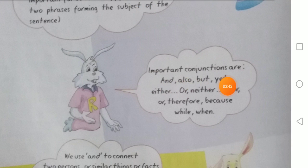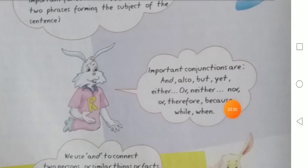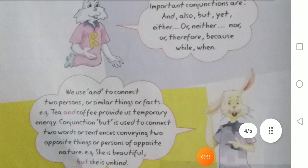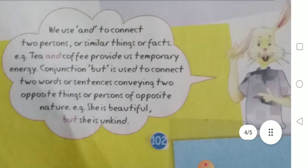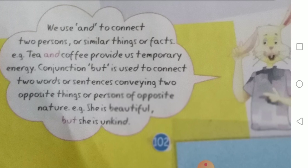Important conjunctions: जो खास conjunctions हैं जो हम बोलने में और लिखने में इस्तेमाल करते हैं — and, also, but, yet, either, or, neither, nor, therefore, because, while, when. ये सब भी खास conjunctions हैं। We can use these conjunctions to speak in English or to write. English बोलने के लिए और लिखने के लिए in conjunction का इस्तेमाल होता है।